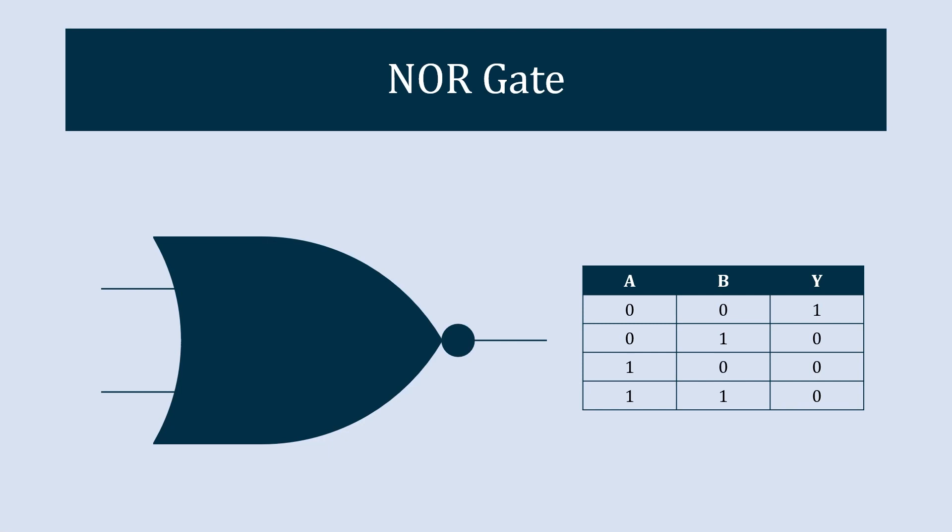The output of the NOR gate is 1 only if all the inputs are false or 0. Basically, this gate is the inverse of the OR gate.